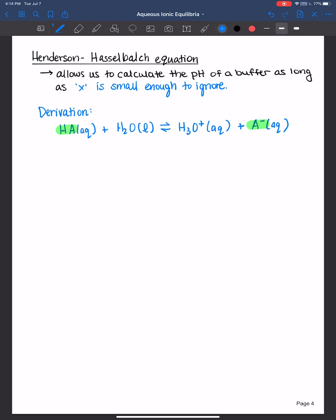Now we can derive the Ka expression, products over reactants, excluding water because it's a liquid. And we can rearrange this to isolate the hydronium ion concentration. So just doing a little bit of algebra here.